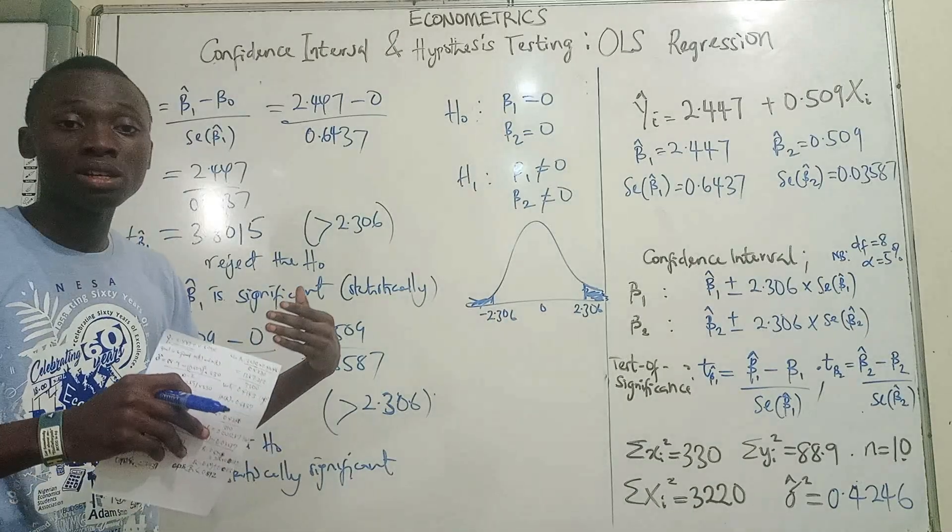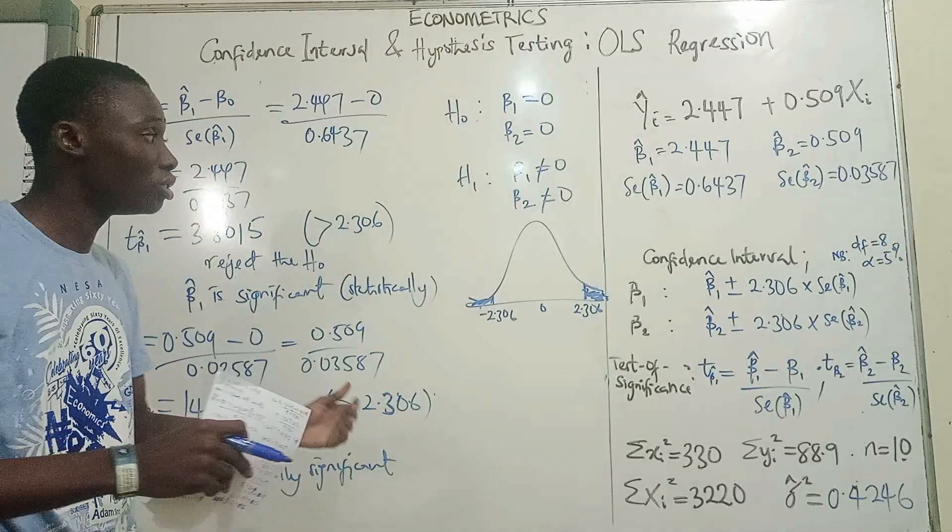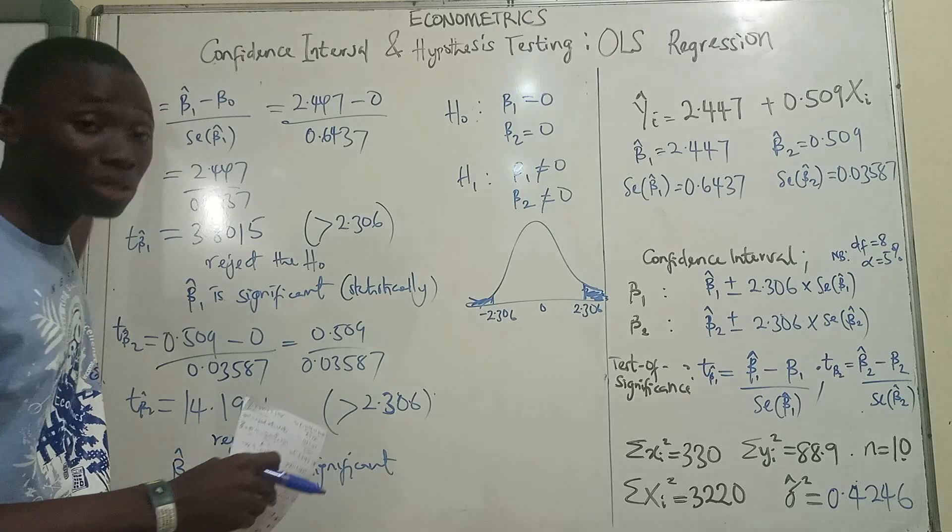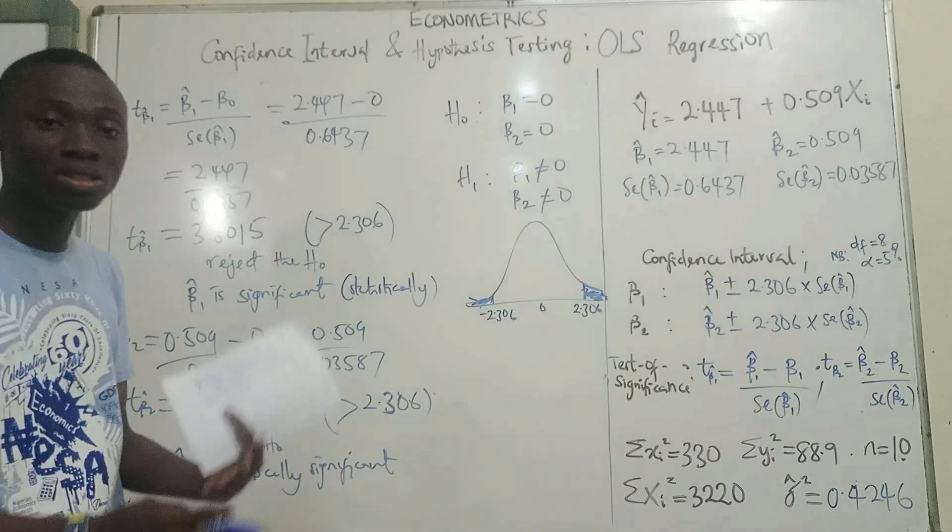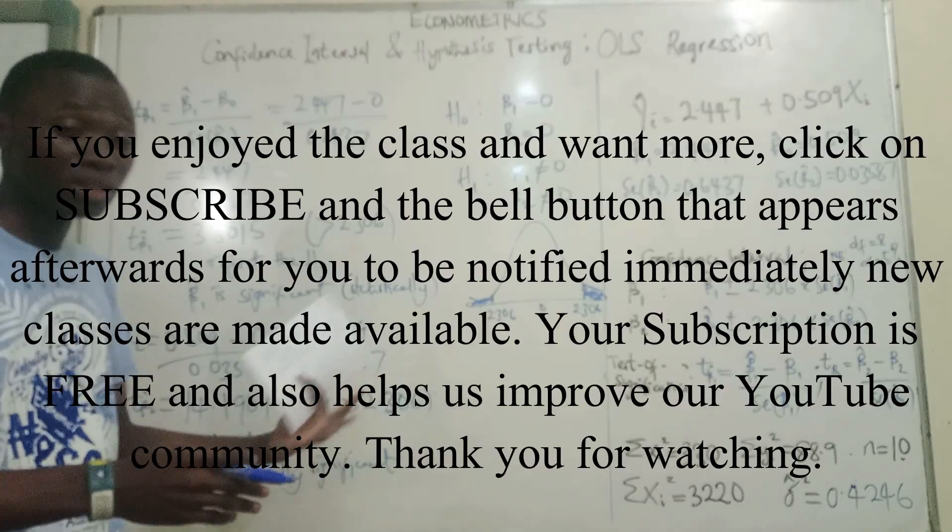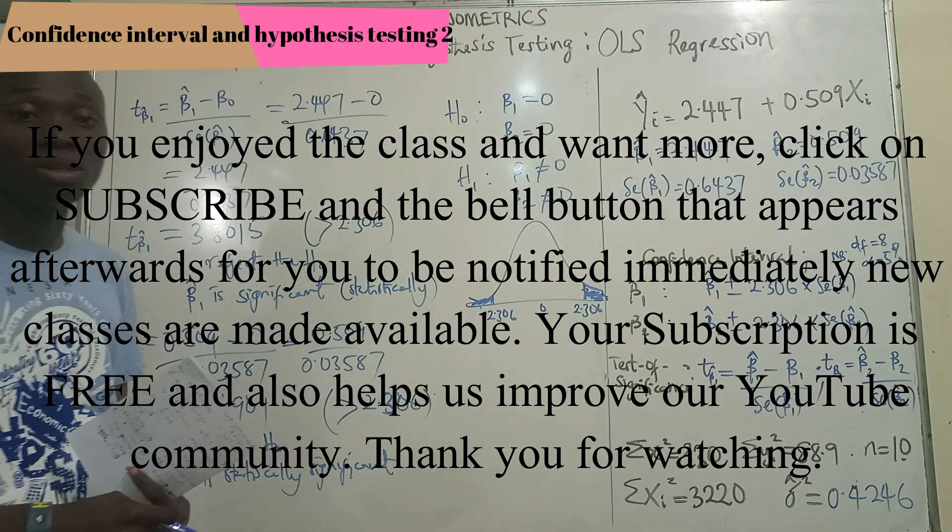Remember this is just the two variable case. If you are dealing with multiple regression, you will be testing for beta 1, beta 2, beta 3, on and on. And there's also what we call the joint test which you also do, the F test and several other tests which can be done.